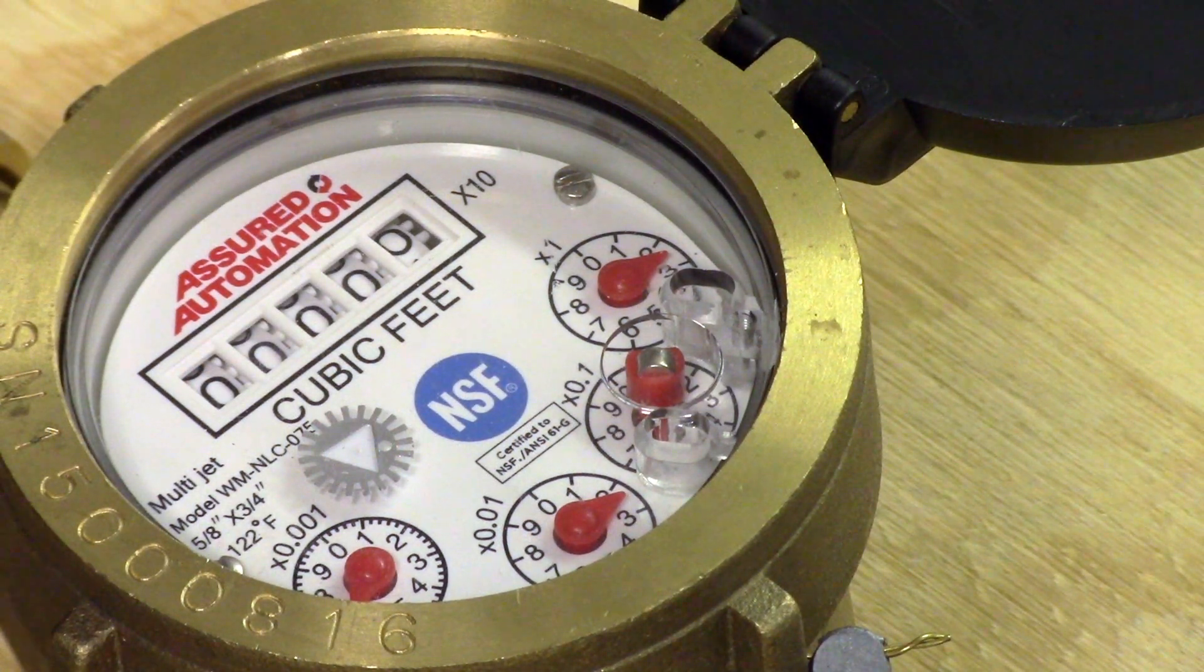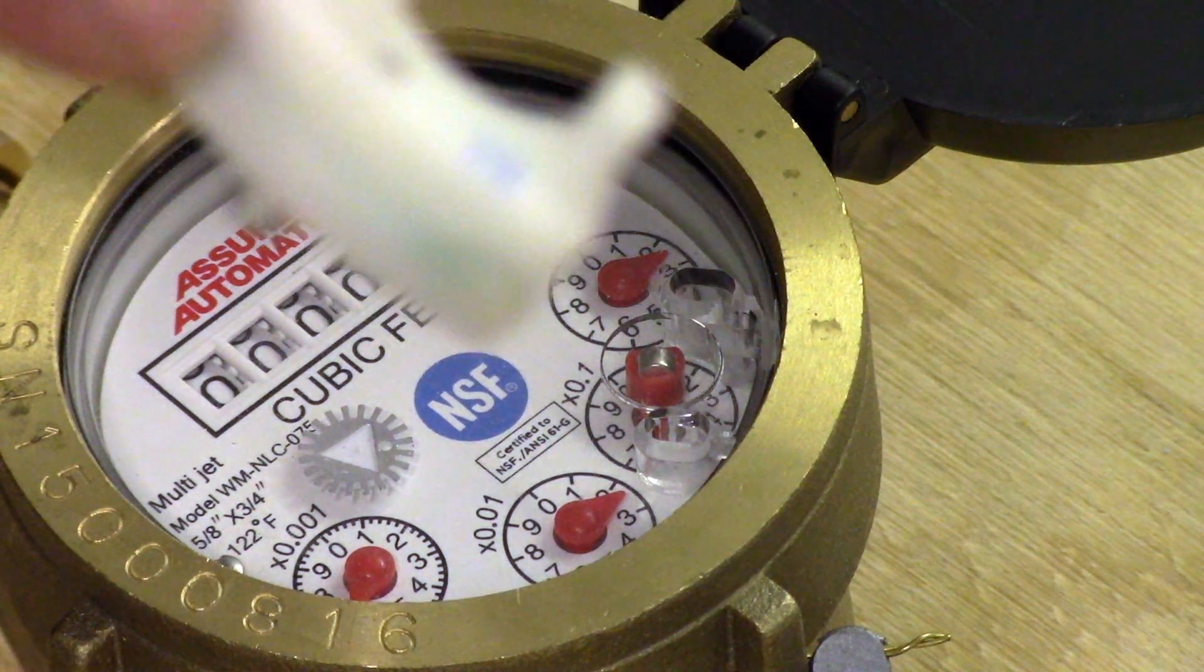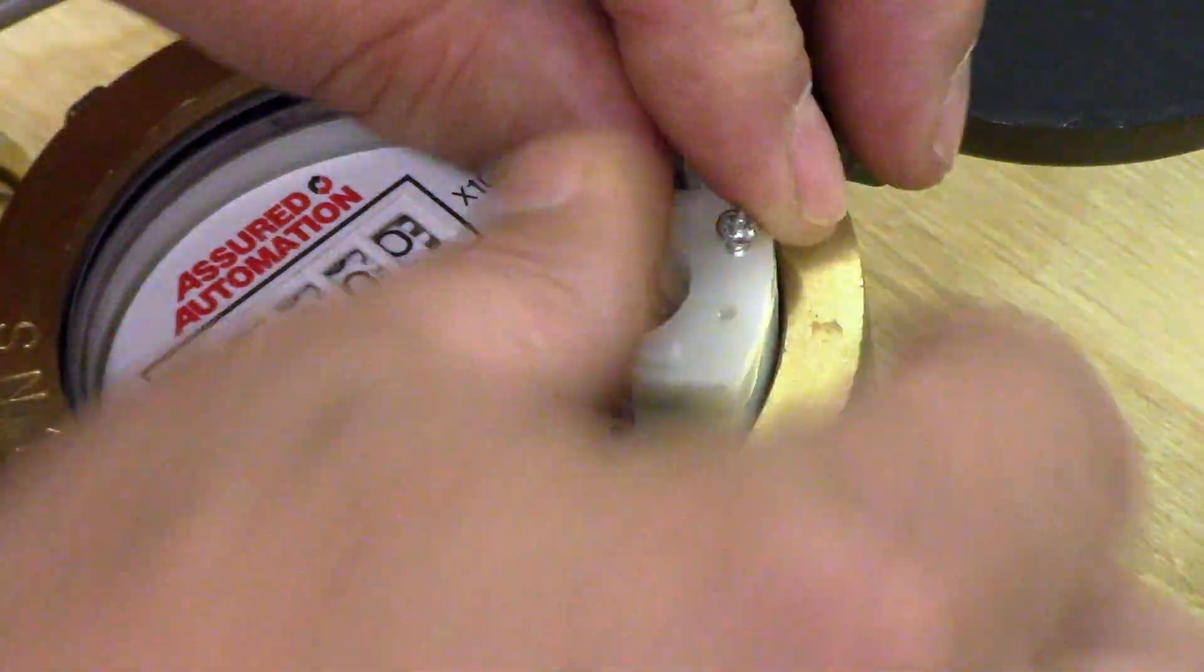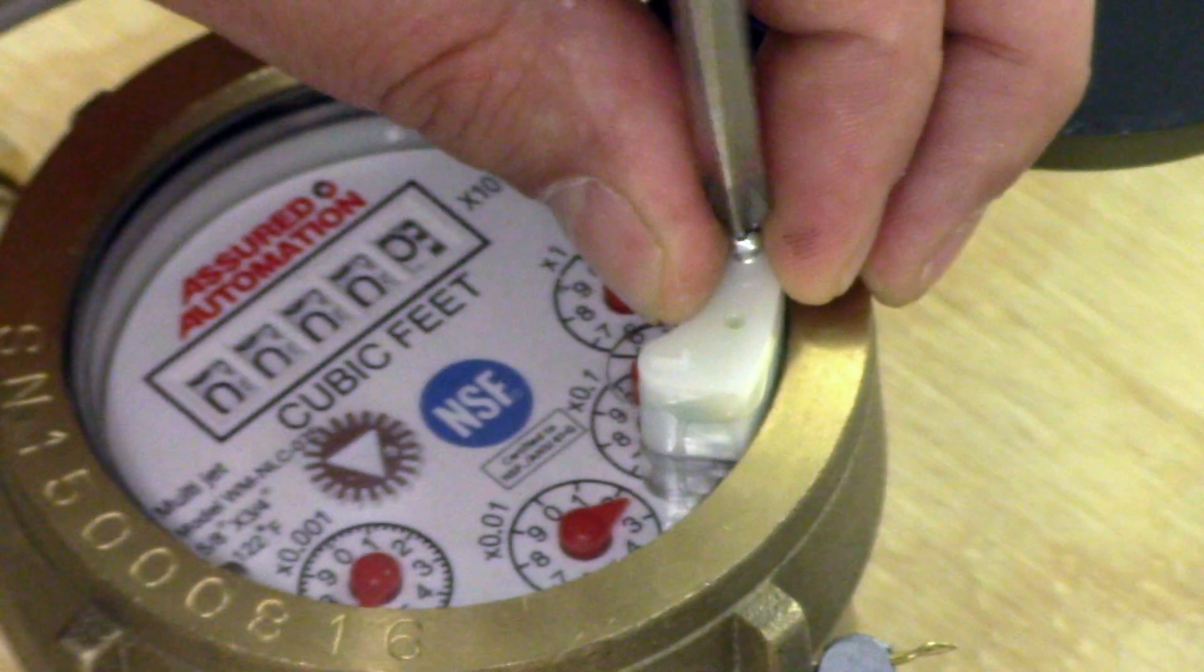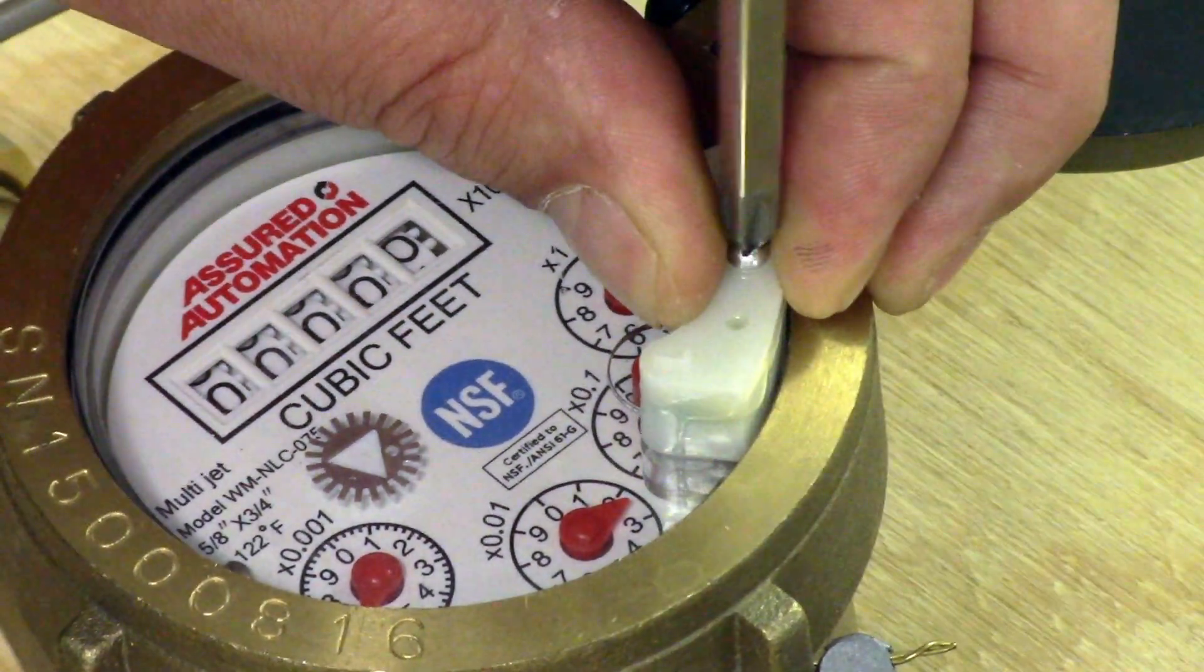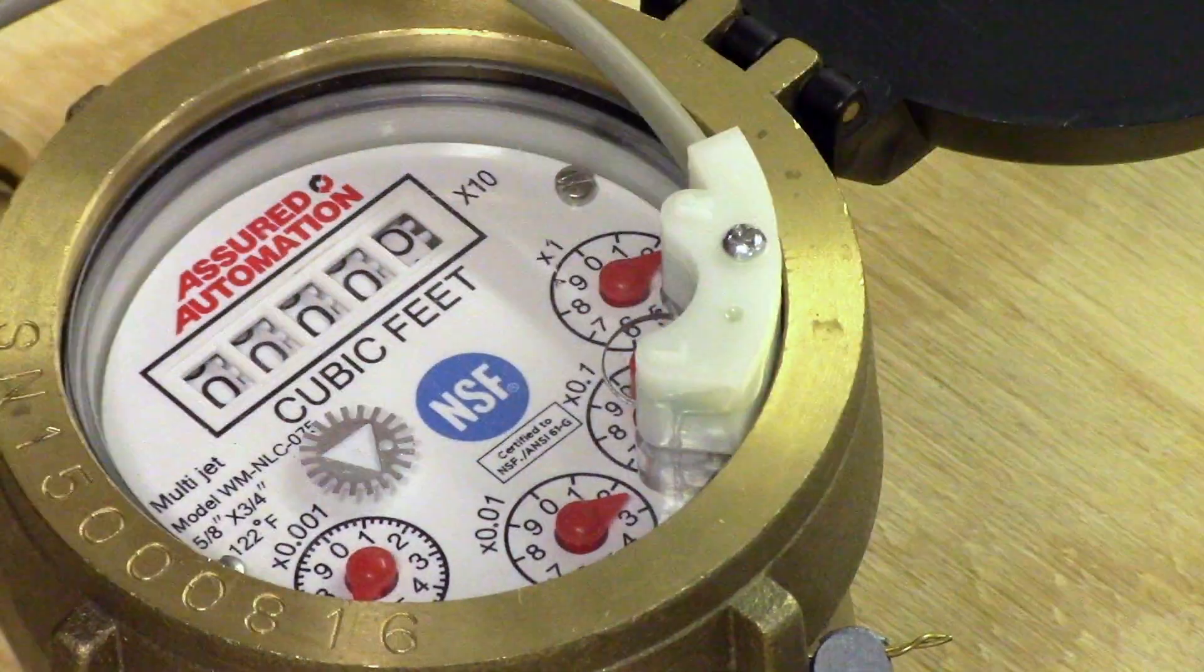To install the switch on the meter simply use these two positioning pins here. Sit them into the hole and it's one screw. There you go. It's that easy.